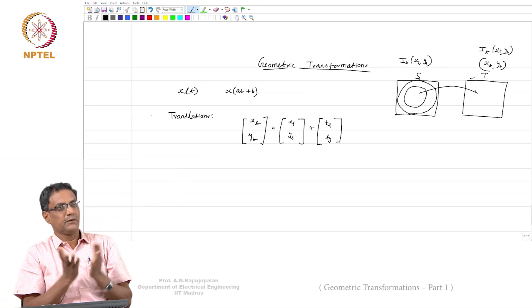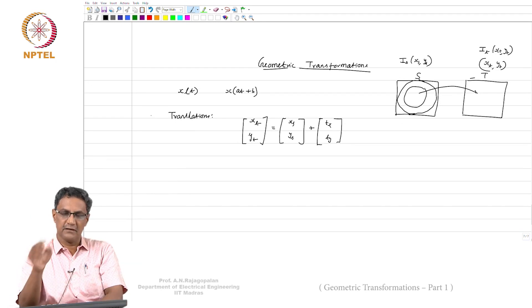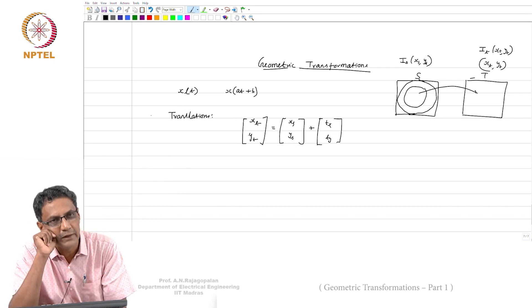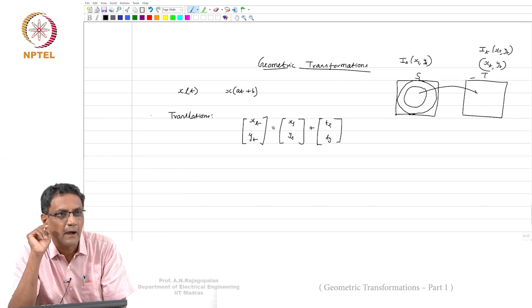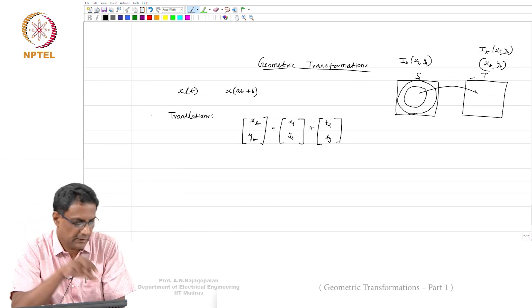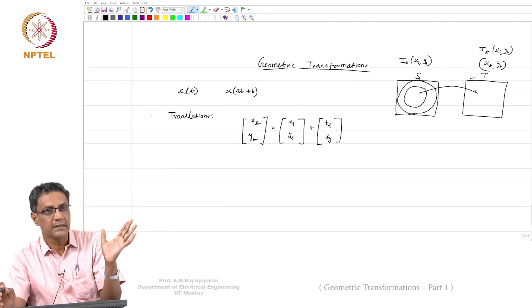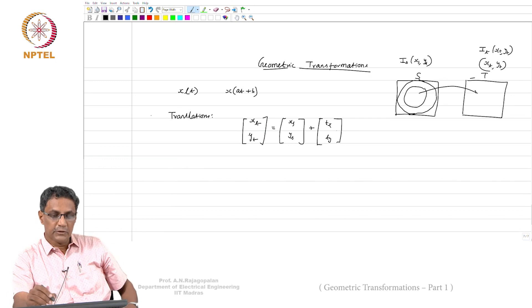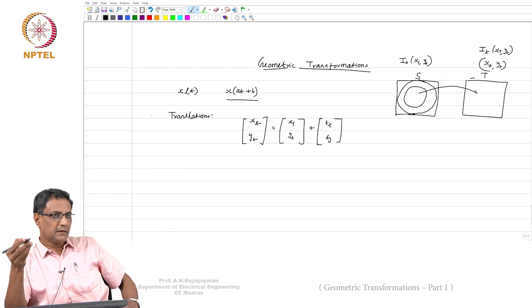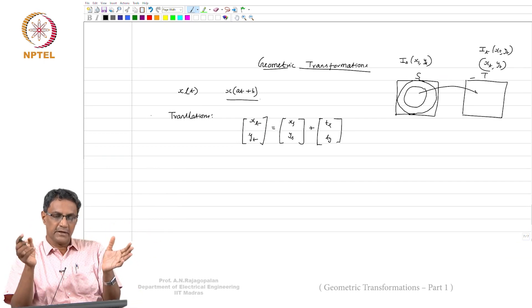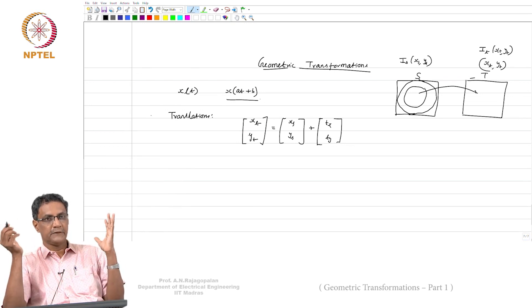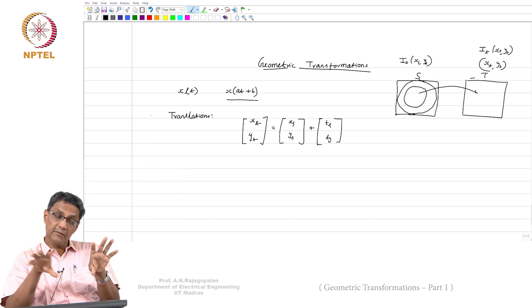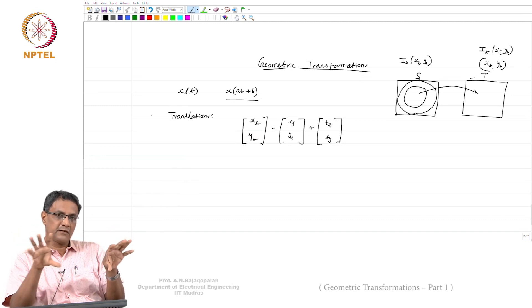Now the interesting thing with respect to images is, when you write for 1D signals it seems straightforward. But as far as images are concerned, you should notice that this tx and ty is independent of xs and ys. It is going to be applied on all xs and ys. Whether I take 0,0 or somewhere in the middle of the image, everywhere I am going to apply the same tx, ty. That is what we call as a global shift. But as far as images are concerned, there can be local shifts and there can be global shifts.